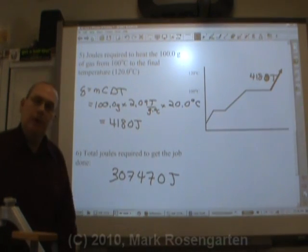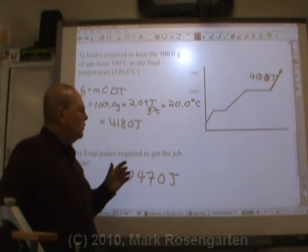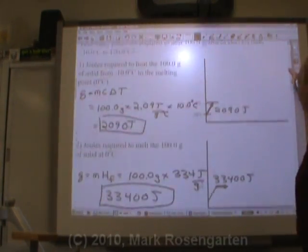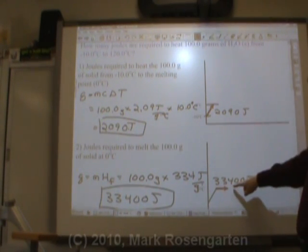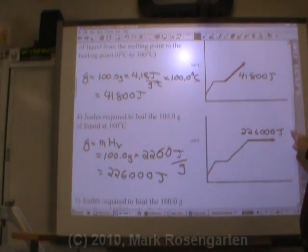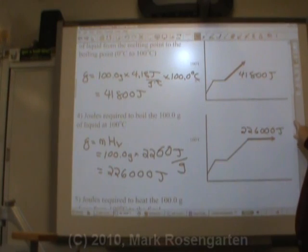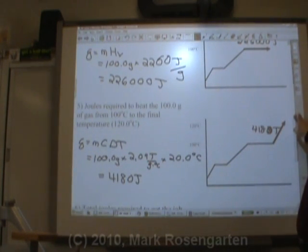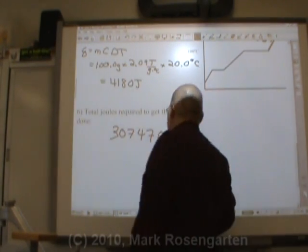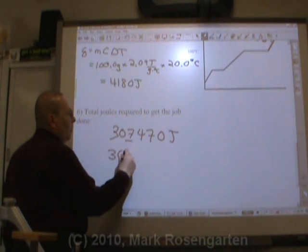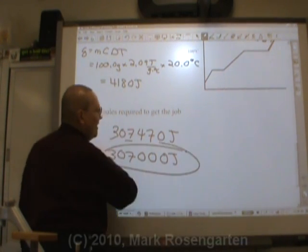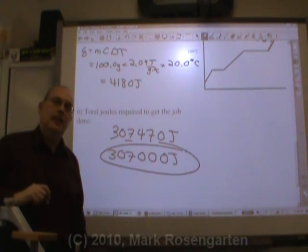But ladies and gentlemen, our job is not done yet. You see, when adding numbers, you have to round to whichever place is the least precise. So let's see which place is the least precise. Starting from the top, this goes to the tens place. This goes to the hundreds place. Hundreds place is least precise. Hundreds place. Thousands place. That's the least precise. Tens place. So thousands place is the one that went out the least far. So we have to round our final answer off to the nearest thousand joules. 307,000. And that is the number of joules it's going to take to get the job done.